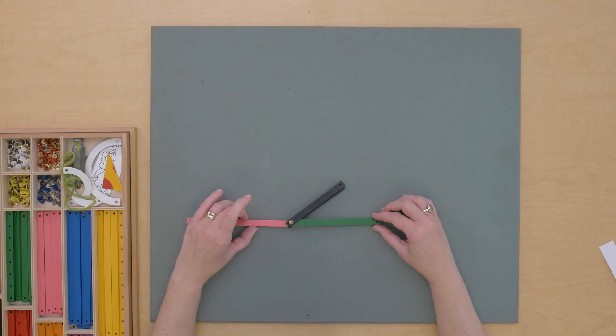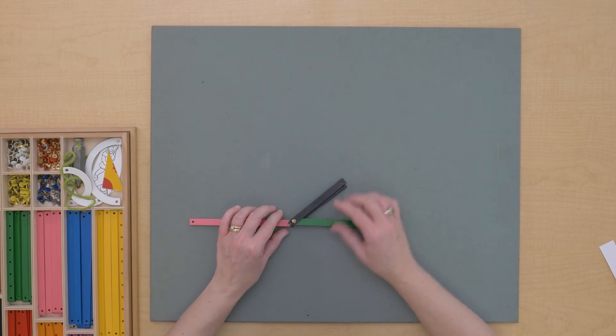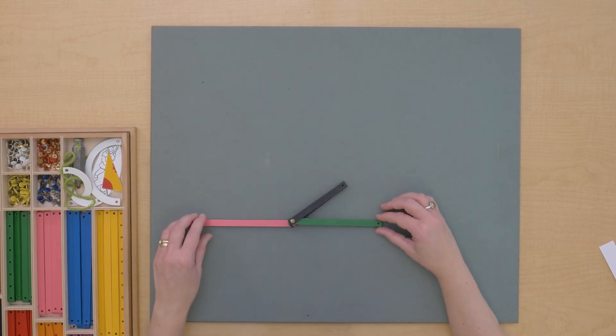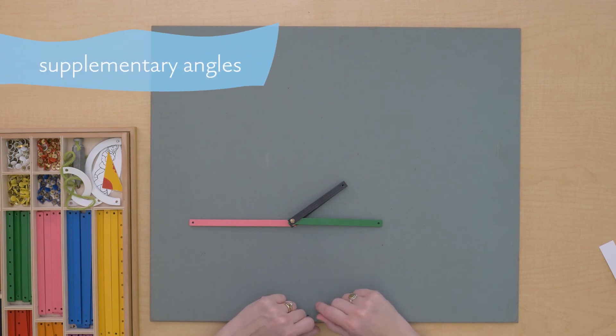Now there's more angle relationships. These two angles come together and they make a straight angle. That means that these two angles are supplementary. They add up to 180 degrees.